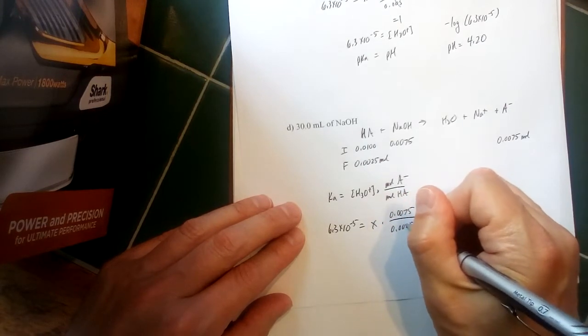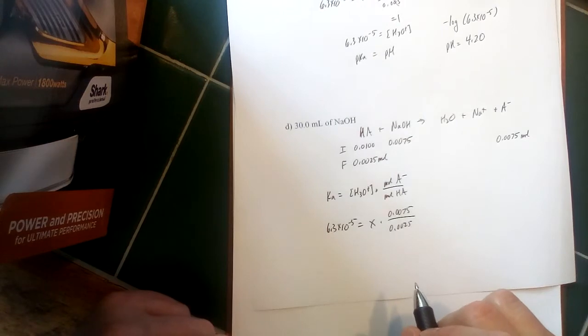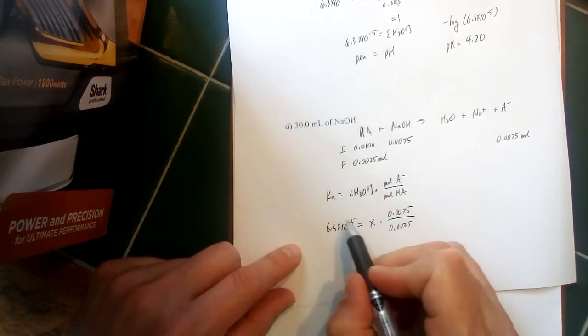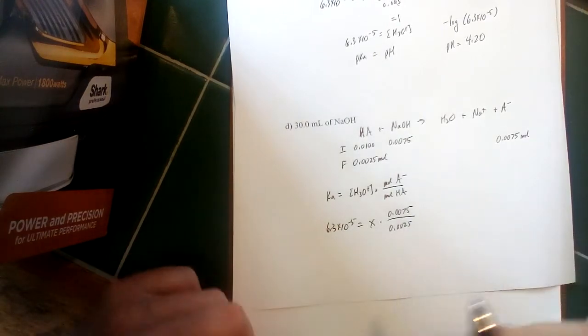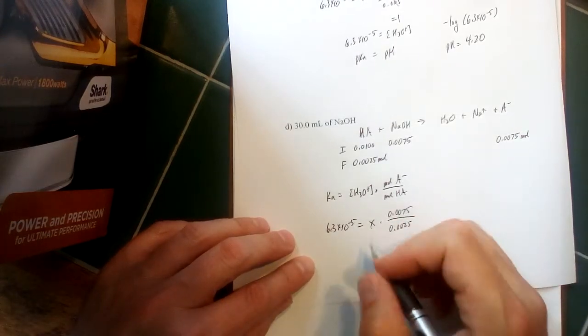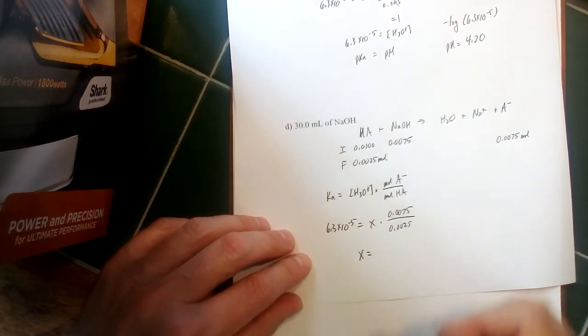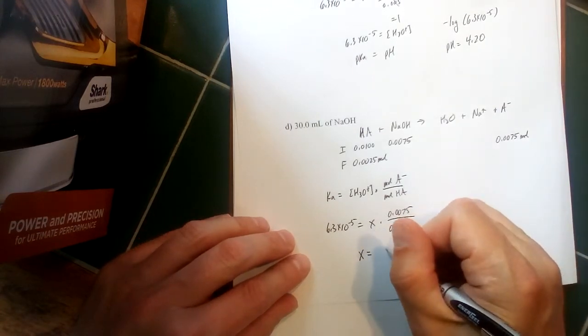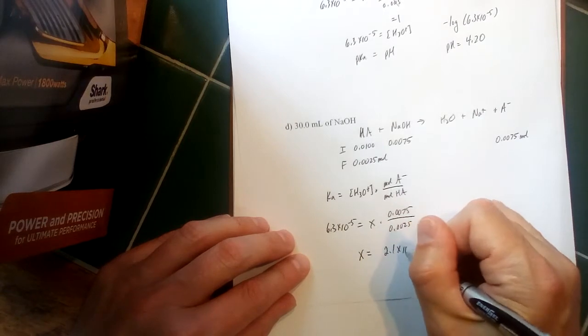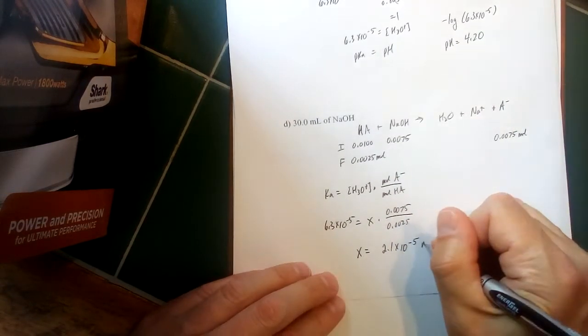So you can see this is reversed from what it was in part B. In part B we multiplied this by three; now we're going to have to divide it by three. When we solve this problem, divide both sides by three here—that would leave x on one side—and our concentration would become 2.1 times 10 to the minus fifth molar, which is our concentration of hydronium ion.